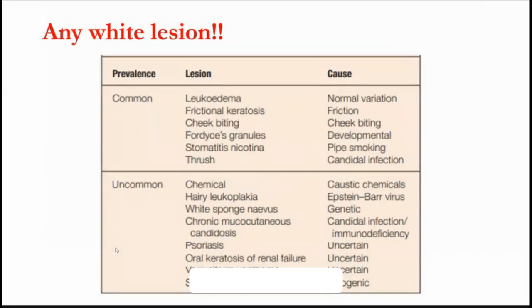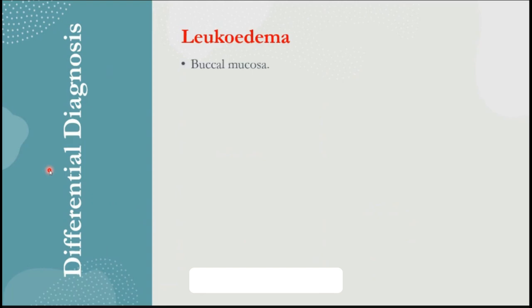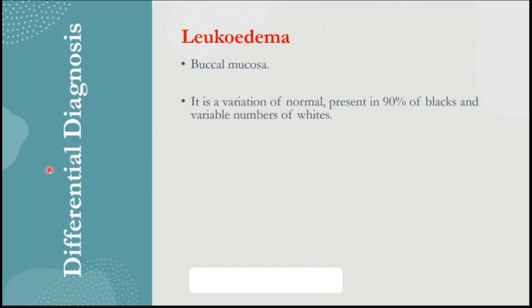When it comes to differential diagnosis of white lesions, you have to differentiate benign lesions such as leukoedema, frictional keratosis, cheek biting, Fordyce's granules, stomatitis nicotina, and thrush — there are many white lesions which all have to be differentiated from each other histopathologically and from pre-malignant lesions or conditions. One particular white lesion which people might mistake for leukoplakia — the pre-malignant lesion — is leukoedema. This is normally seen in the buccal mucosa and it appears as a variation of the normal.